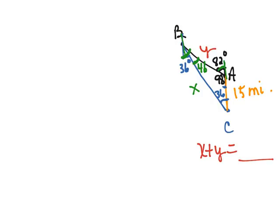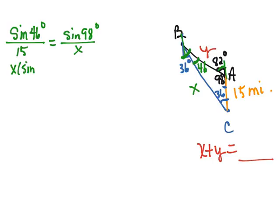So let's first of all find side X. And so we can find side X by saying that the sine of 46 degrees over 15, because that's the side across from it, will be equal to the sine of 98 degrees divided by X. So cross multiply, we'll have X times the sine of 46 degrees equals 15 times the sine of 98 degrees.